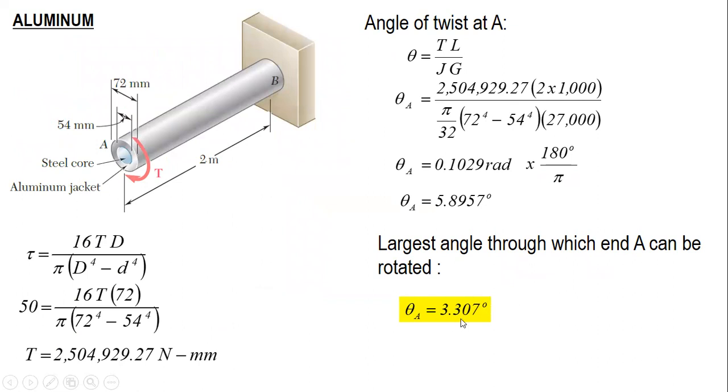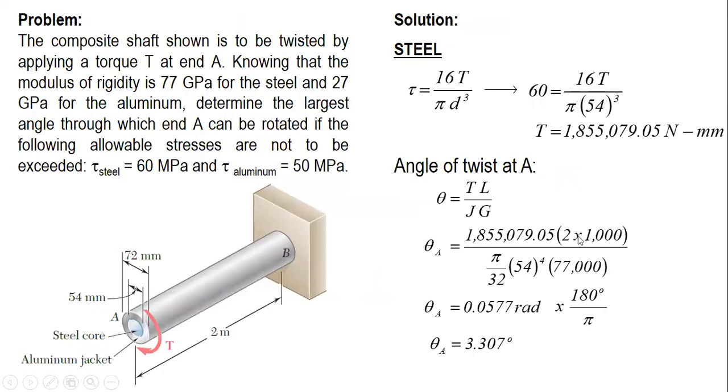This is safe because if we use the larger angle as our largest angle, we'll have a torque of 2,504,929.27 N-mm. If you use this value on the steel...